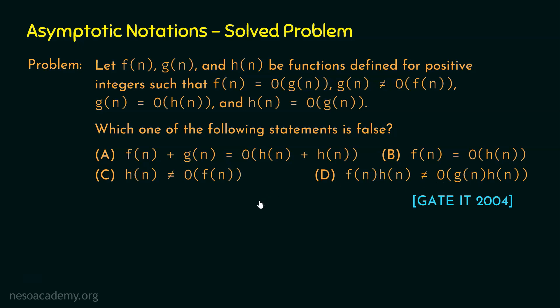In order to solve this problem, the best approach is to assume some specific f(n), g(n) and h(n). In this way, we can easily find which of these statements is false. Let us assume some f(n), g(n) and h(n).